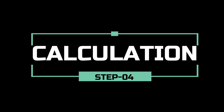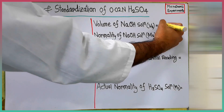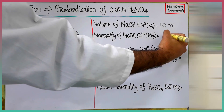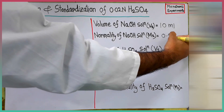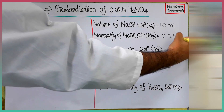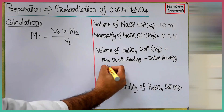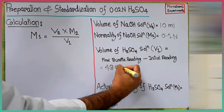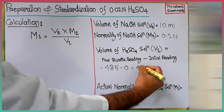It's time for the calculation. We took 10 ml of standard sodium hydroxide solution in the conical flask during the titration, so V2 is 10 ml. The normality of standard sodium hydroxide solution N2 is 0.1 normal. Volume of sulfuric acid solution used in the titration from the burette, V1, is the final burette reading 48.5 minus initial reading 0, which is 48.5 ml.